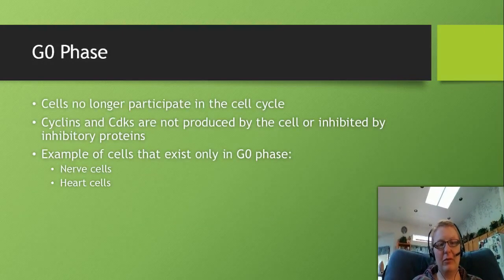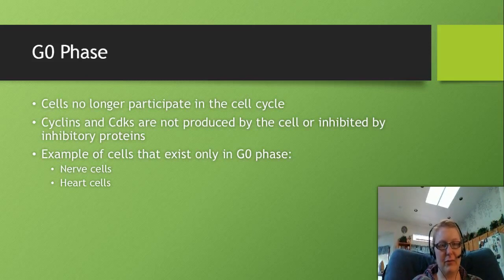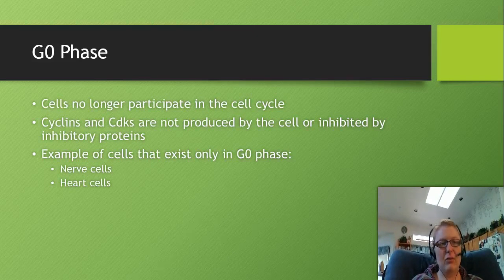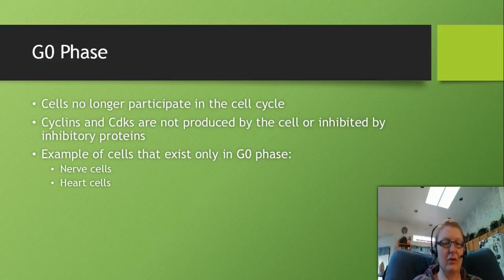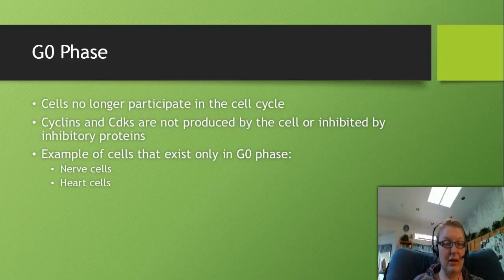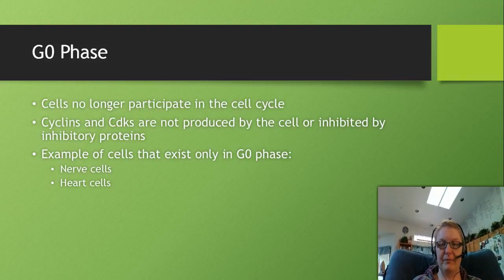One more phase to discuss is the G0 phase. Some cells don't go through the cell cycle at all once they've differentiated - nerve cells, heart cells, etc. They actually dismantle the machinery in their cell that would allow division; they don't produce cyclins or CDKs. Not every cell goes through the cell cycle. Cells like skin cells and gut cells do cycle, but many organ cells, once damaged, cannot be replaced or repaired - those are cells in G0 phase.